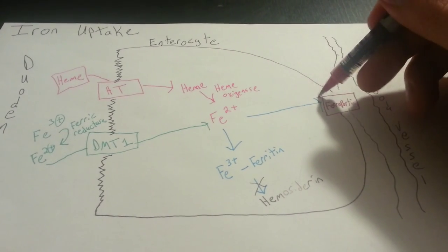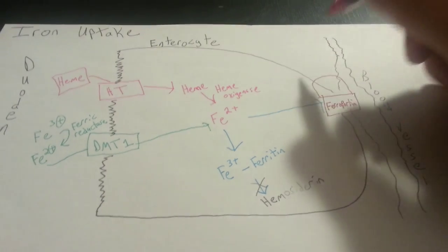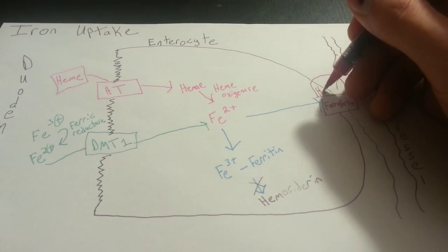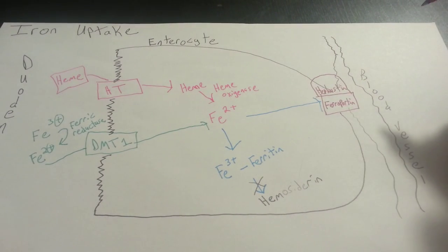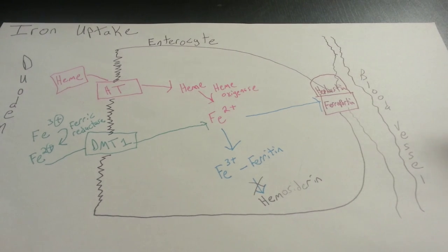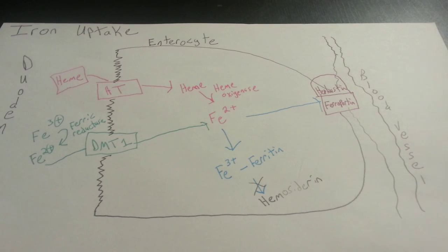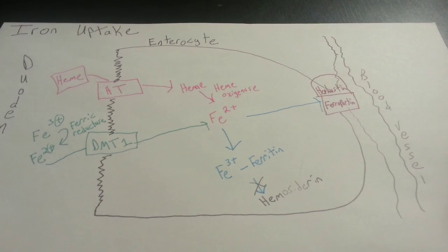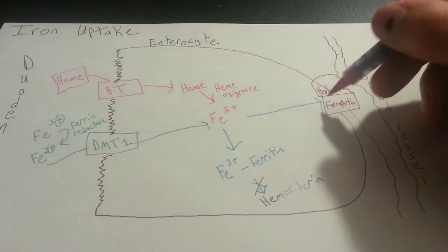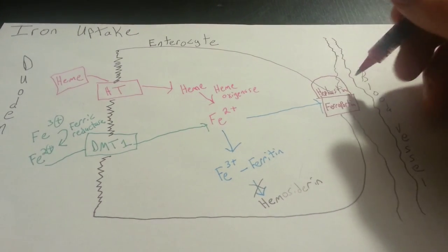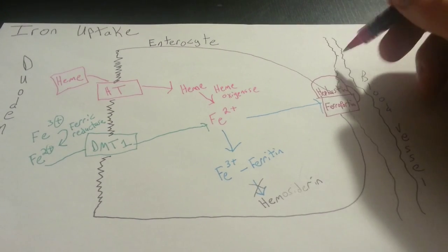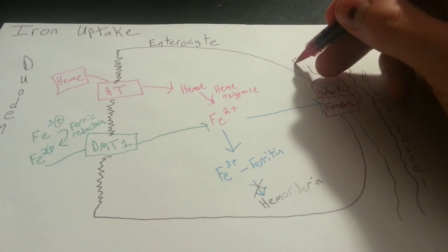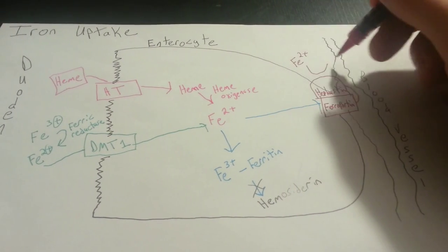And alongside this ferroportin is an enzyme called hephestin. And hephestin is actually named after the Greek god Hephaestus, who is the Greek god of metalwork and blacksmithing for the gods. But hephestin, after ferroportin transports Fe2+ into the blood vessel, it's going to go straight to hephestin and go from Fe2+ to Fe3+.